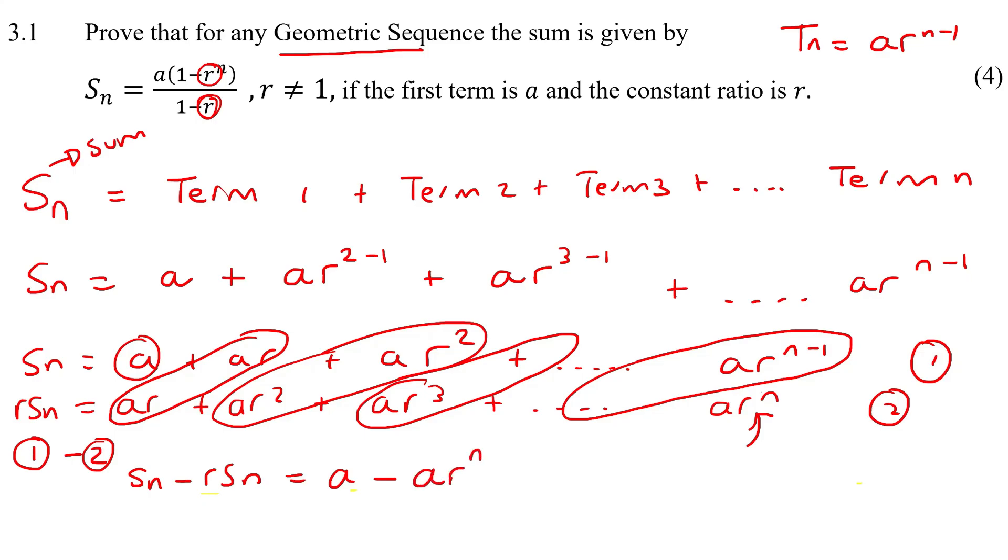Now it's pretty straightforward. So all you're going to do on this side is you're going to take out a common factor. What is the common factor? Sn. And you're left with one minus r. On this side you're going to take out a common factor which is a. And you're going to be left with one minus r to the n.